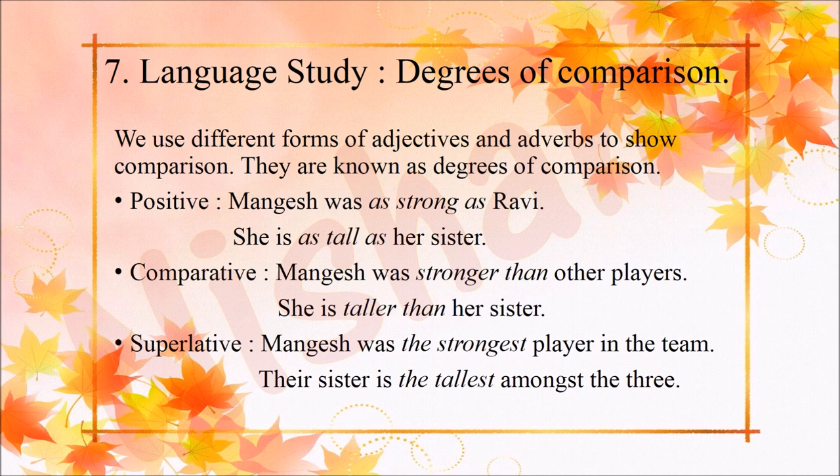The Positive degree: Mangesh was as strong as Ravi. She is as tall as her sister. In the positive degree, two things are equal.